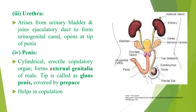The urethra arises from the urinary bladder and joins with the ejaculatory ducts to form the urinogenital canal, which opens at the tip of the penis. The penis is a cylindrical erectile copulatory organ forming the external genitalia of the male rat. The tip of the penis is called the glans penis, which is covered by a covering called the prepuce, and it helps in copulation. In this diagram you can see the testes covered by the scrotal sac, epididymis, vasa deferentia leading to the urethra, forming the ejaculatory duct, and the copulatory organ — the penis.